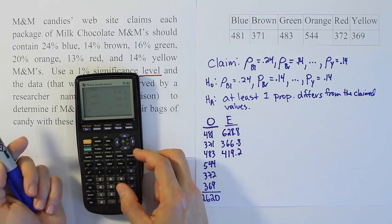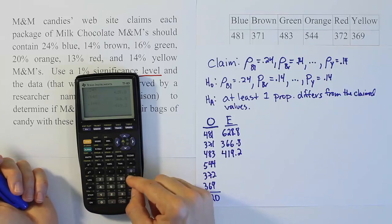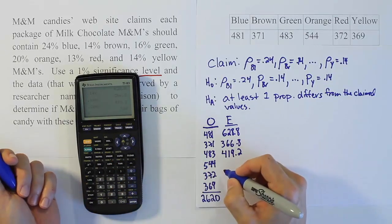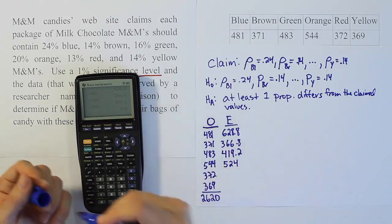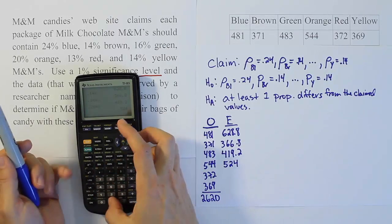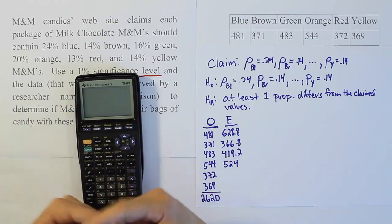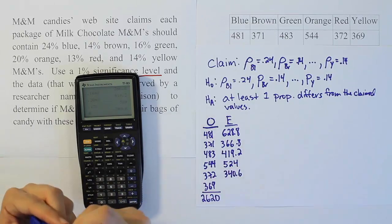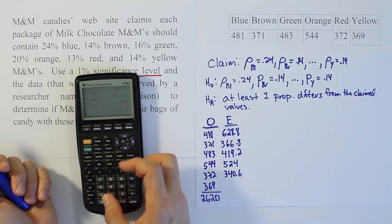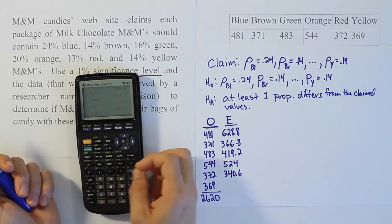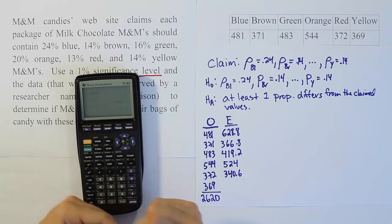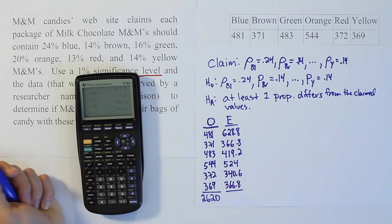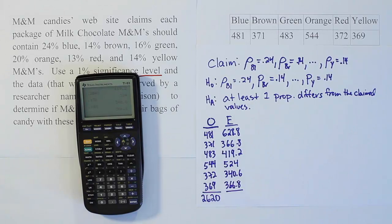Orange is 20%, so 0.20 times x gives 524. Red is 13%, so 0.13 times x gives 340.6. Lastly, yellow is 14%, so 0.14 times x gives 366.8. There's all my expectations. It's a lot of work, but there they are.